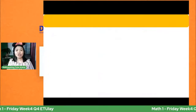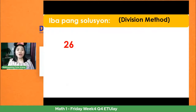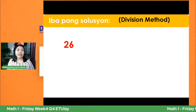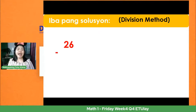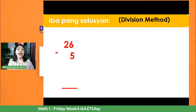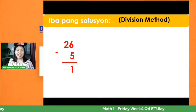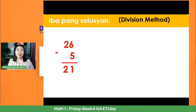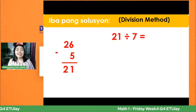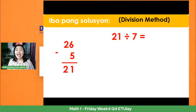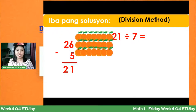Iba pang solusyon: 26 yung araw na itinatanong, ibabawas natin ang ikalima ng Oktubre — yung unang araw ng pasukan. So 26 minus 5 = 21. Ngayon, i-divide na natin yung 21 sa 7 — bakit 7? Kasi yun ang bilang ng isang linggo, 7 araw. Gumamit ako ng 21 oranges bilang larawan: ilang 7 mayroon sa 21?